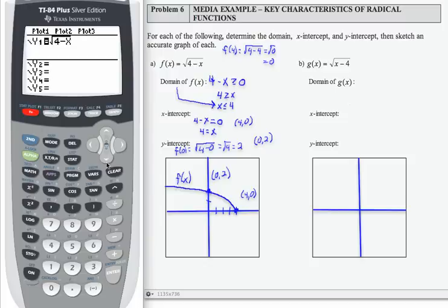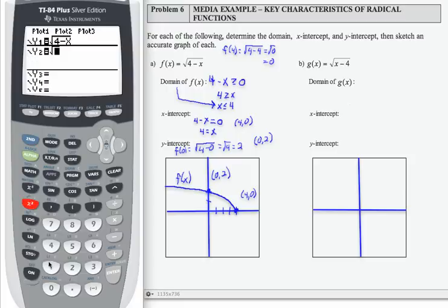Again, I'm going to start by graphing the function in my calculator first, and I'm going to leave the other function there. So I have the square root and then x minus 4. I do want to say something about